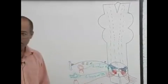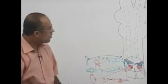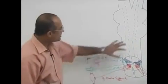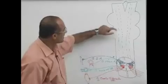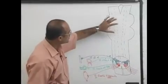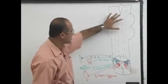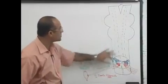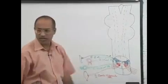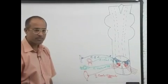Throughout the brainstem, motor nuclei will be on the medial side and sensory nuclei will be present laterally. Once this concept is clear, we will go into detail about exactly which nuclei are present and which fibers are connected to them.